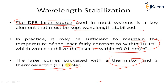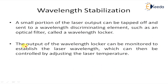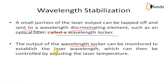The laser wavelength can also change due to aging effects over a long period of time. The laser manufacturer usually specifies this parameter, typically around plus or minus 0.1 nanometers. A small portion of the laser output can be tapped off and sent to a wavelength discriminating element such as an optical filter, called a wavelength locker. The output of the wavelength locker can be monitored to establish the laser wavelength, which can then be controlled by adjusting the laser temperature.